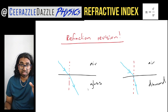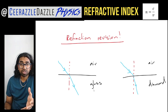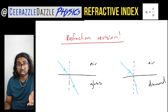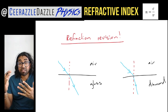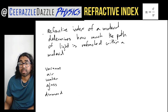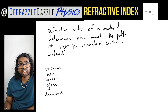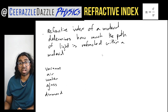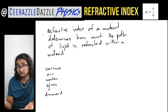We need a way of measuring the amount of refraction that takes place within a material, because glass has a certain amount of refraction and diamond has a certain amount, and we can actually give them a value. This value is called the refractive index of a material. The refractive index of a material determines how much the path of light is refracted. The higher the value of the refractive index, the more the refraction; the lower the refractive index, the lower the refraction.